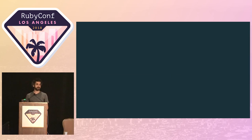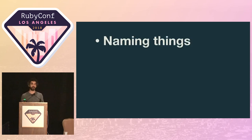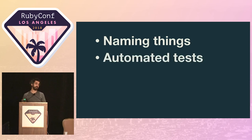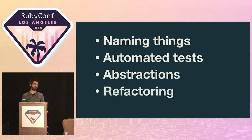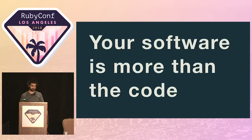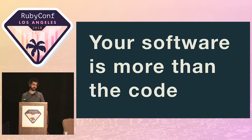As developers, we do many things to try and keep our code maintainable. We carefully think about the names for our objects and methods. We write and maintain automated tests. We try and create good abstractions. We refactor. We make deliberate effort because we want to keep our code easy to understand and easy to change. But here's the thing: our software is so much more than just the code. At its best, code can clearly articulate what our software is doing. But if we want to understand the deeper why of our software, it's often key that we understand how it got to be where it is today.